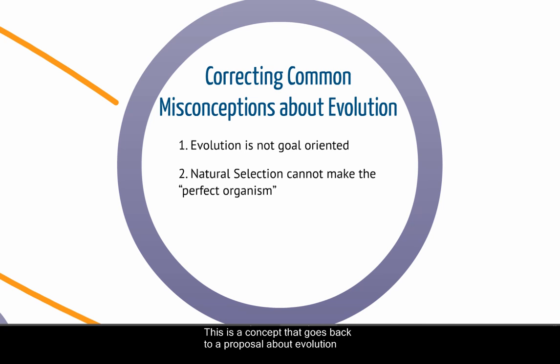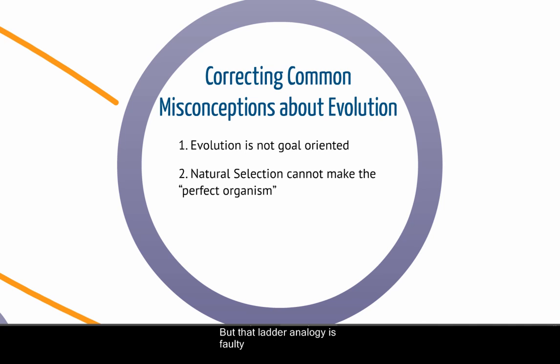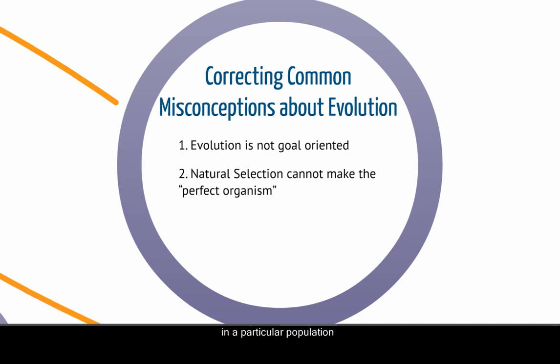This concept goes back to a proposal about evolution that came before Darwin, called Lamarckian evolution. Lamarck thought that individuals could strive to become better. We often depicted evolution as a ladder where individual species were moving up and becoming more sophisticated. But that ladder analogy is faulty in that it assumes one species is better or more improved than another. Remember, natural selection is just survival for an individual in a particular population, and evolution is the change in gene frequency that results from that.